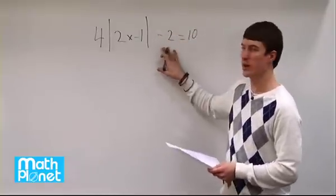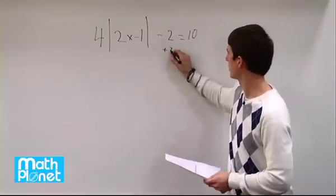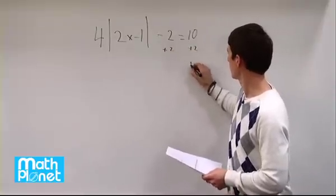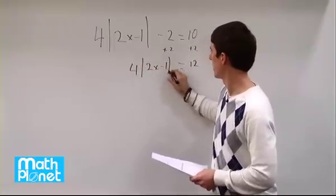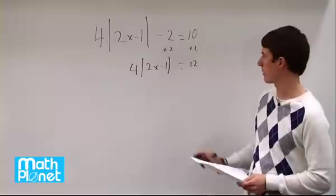So we're going to start off by adding 2 to both sides, plus 2, plus 2, so we have 12 equals 4 times the absolute value of 2x minus 1. Then we have to divide both sides by 4.